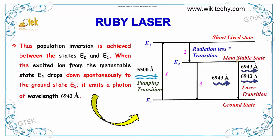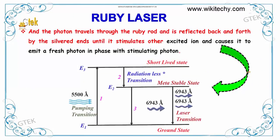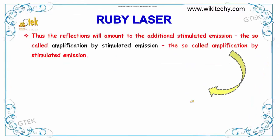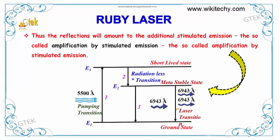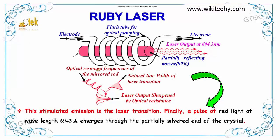The excited ion from the metastable state E2 drops down spontaneously to the ground state, emitting a photon of wavelength 6943 Angstrom. The photon travels through the ruby rod and is reflected back and forth by the silvered ends until it stimulates other excited ions, causing them to emit a fresh photon in phase with the stimulating photon. Thus the reflection amounts to additional stimulated emission, so amplification by stimulated emission happens. This stimulated emission is the laser transition. Finally, a pulse of red light of wavelength 6943 Angstrom emerges through the partially silvered end of the crystal.